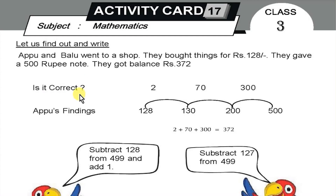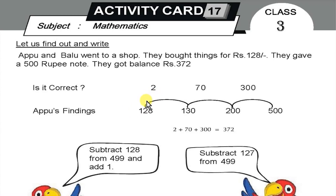Is it correct? They used the same method — they found a round figure. Apo's findings: for $500, they paid $128. Now we are going to find the rest using the round figure method. Working through: 128 plus steps up to 500.